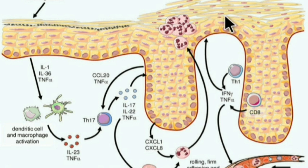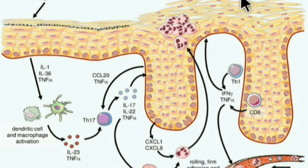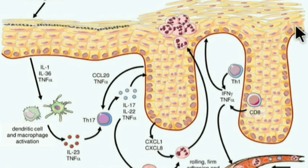This defective barrier causes increased transepidermal water loss, which is why there is dry skin in psoriasis. Aquaporins, a family of water-transporting proteins, are decreased in lesional and perilesional skin of psoriasis. Since aquaporin is important for water entry into cells and is downregulated, cell hydration is also decreased.